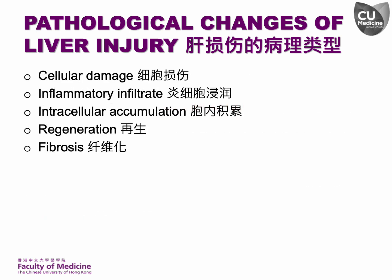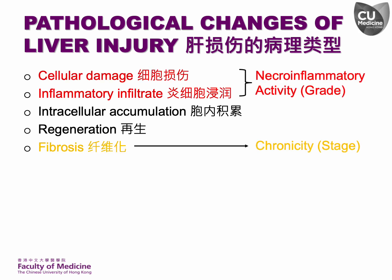Most pathological changes in liver injury can be categorized as cellular damage, inflammation, intracellular accumulation, regeneration, as well as fibrosis. Cellular damage and inflammation are grouped under necroinflammatory activity, also referred to as GRADE, whereas fibrosis indicates chronicity, also known as STAGE.